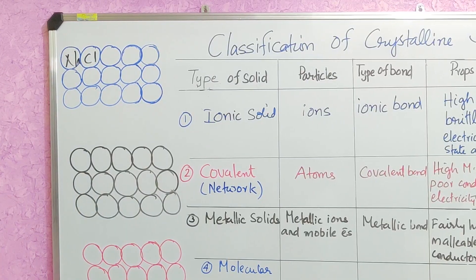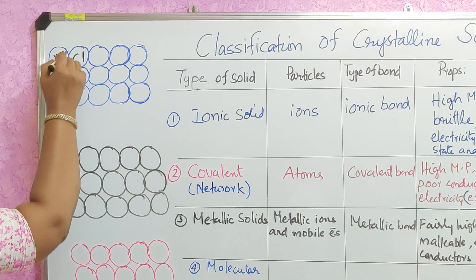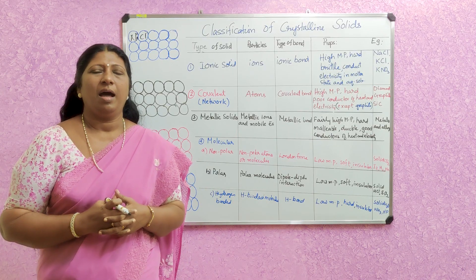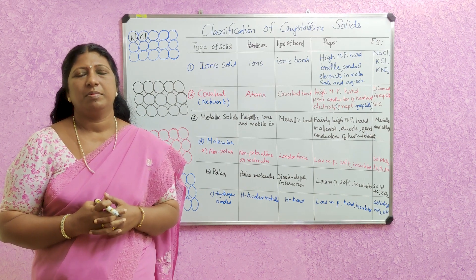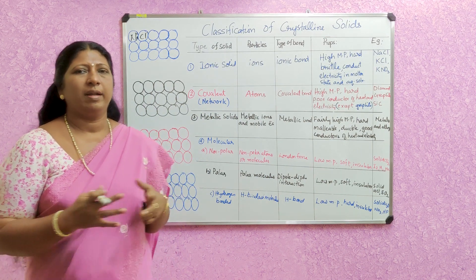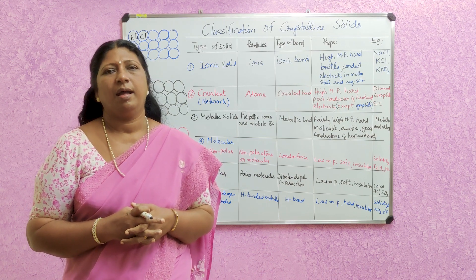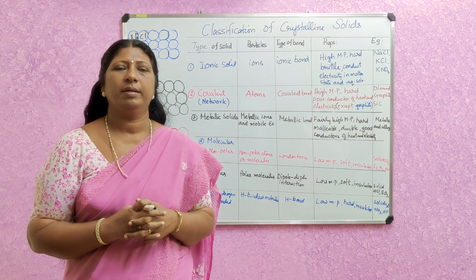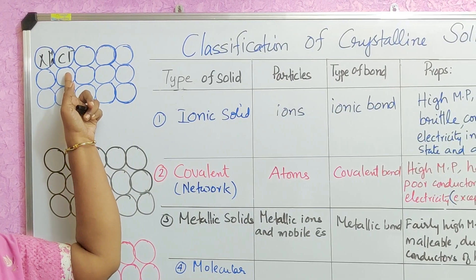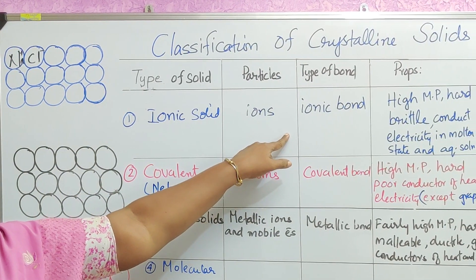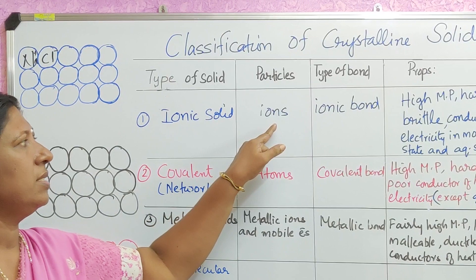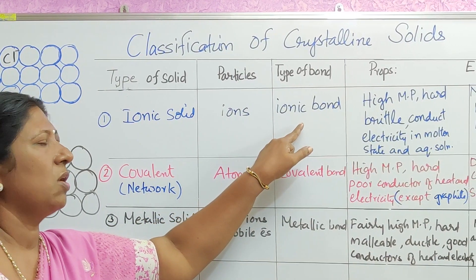We have Na+ and Cl−. The two opposite charges Na+ and Cl− experience a force of attraction. This is the force of attraction between opposite charges, called electrostatic force of attraction. If the particles are ions, the bond is called ionic bond. So the first classification of crystalline solid is ionic solid, where the constituent particles are ions and the force of attraction is called ionic bond.